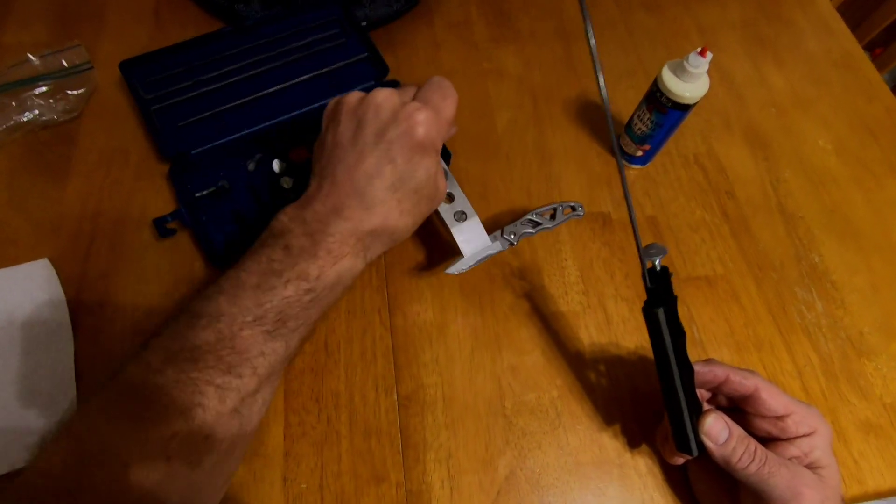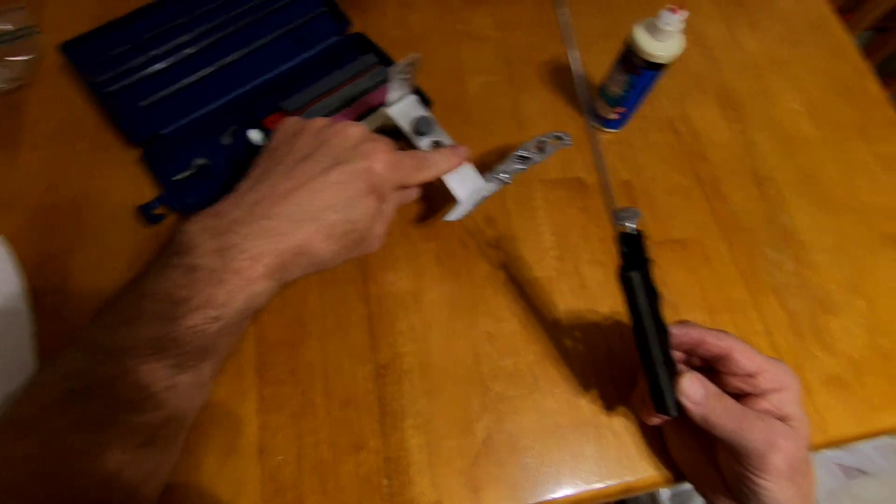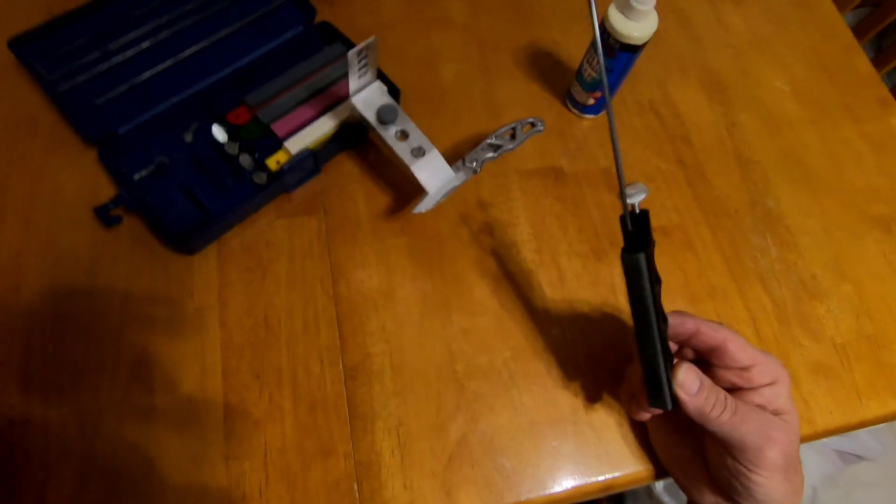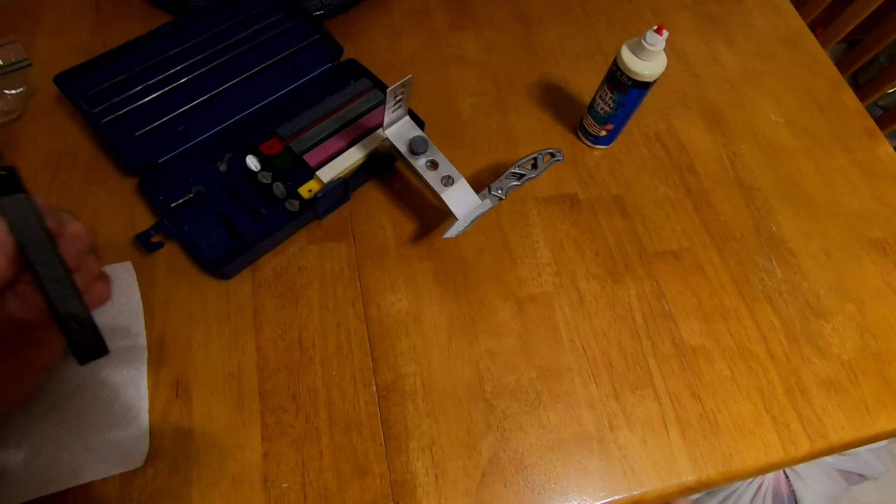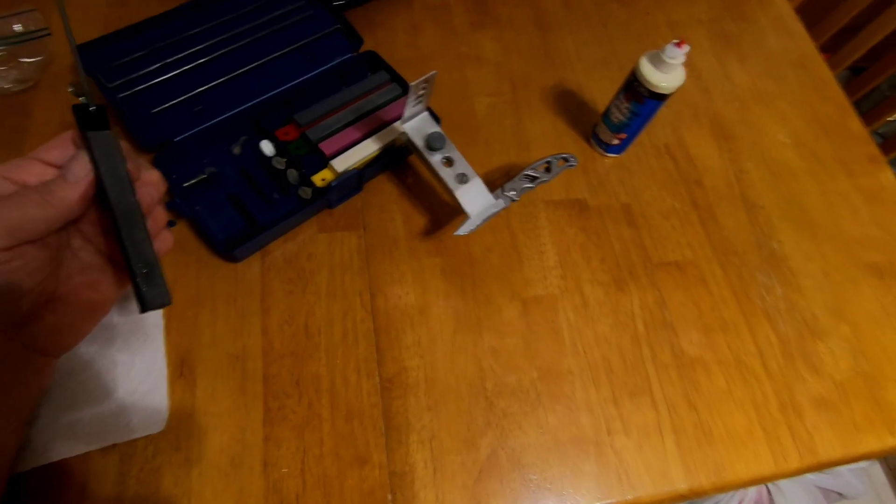And what you do, you just keep going back and forth. I might not do 25 and 25, I might do like 50 on one side and 50 on the other side, depending how bad the blade is. But, like I said, I'm not going to show you the whole thing here. I'm just going to go on, sharpen it, and just show you a little bit with each stone.